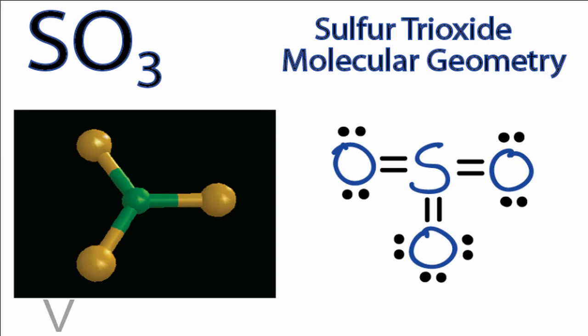So basically, the valence-shell electron pairs around those oxygens are repelling each other, causing them to spread out, giving SO3 its molecular geometry, or shape.